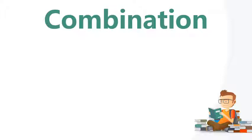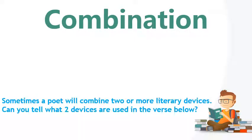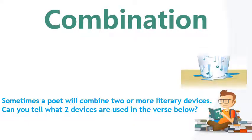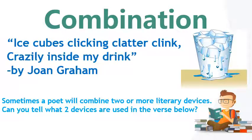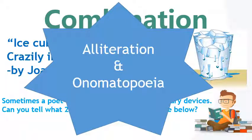Then we have a combination — when a poet uses more than one figurative language device at once. Can you tell what two devices are used in this verse? 'Ice cubes clinking, clattery clink, crazily inside my drink.' Yes — alliteration and onomatopoeia are used. Good job! Let's do it again: 'Ice cubes clinking, clattery clink, crazily inside my drink.' Yes — alliteration and onomatopoeia. Good job!